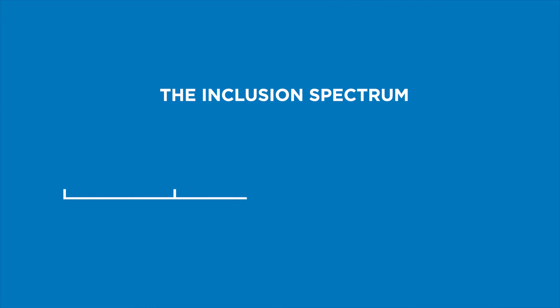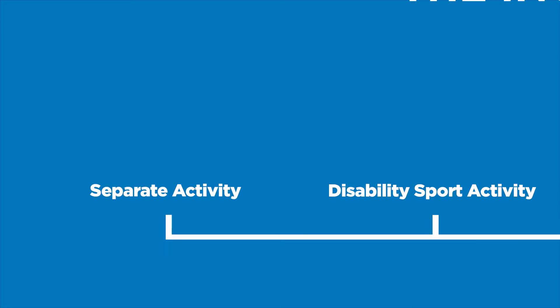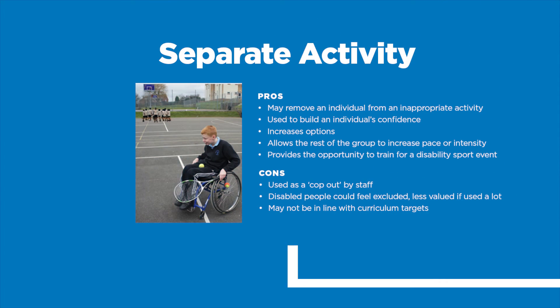There are five main types of activity within the inclusion spectrum, ranging from separate through to open, with pros and cons for each. Separate activity refers to entirely alternative activities designed expressly for disabled people to participate in.